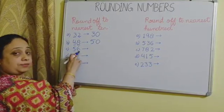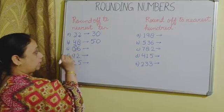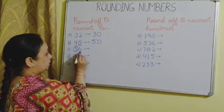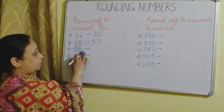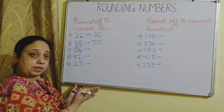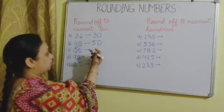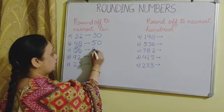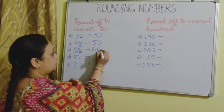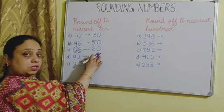Next is 56. We have to round the 10's place, and to the right is the 1's place with digit 6. This 6 is more than 5, so 1 will be added to 5 — and 5 will become 6. In place of this 6, we will write 0. So 56 is rounded off to 60.